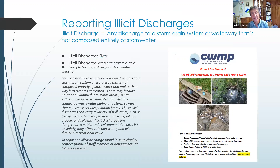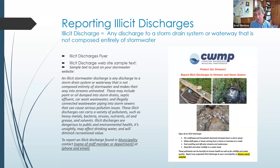An illicit discharge is basically anything discharged to a stormwater system that drains to a stream or water body that is not composed of stormwater. When people dump oil or antifreeze down the storm drain, that goes directly to a creek. If you smell foul-smelling or off-color water, see a fish kill, or notice makeshift pipes going from a building into a ditch or grate, there could be an illicit stormwater discharge. Municipalities should have a way to report that. We give you language in the guide that you can cut and paste into your webpage, and DEP will want to see this on your page when you do your report.